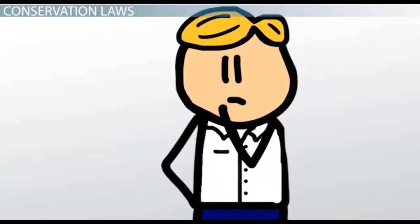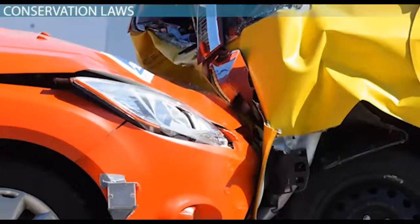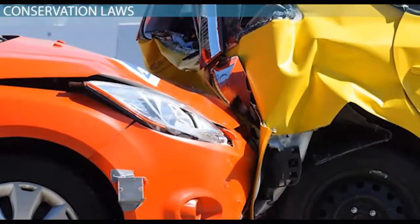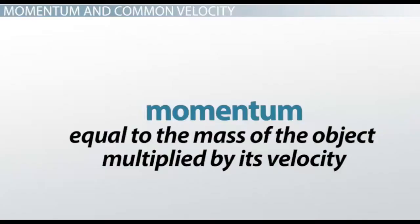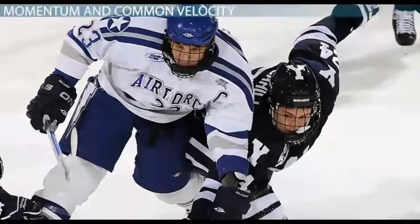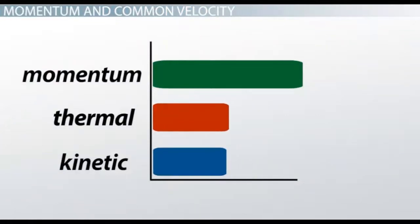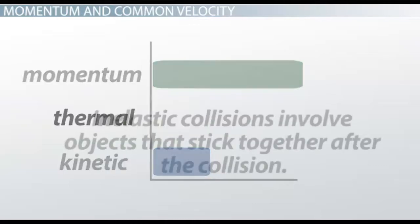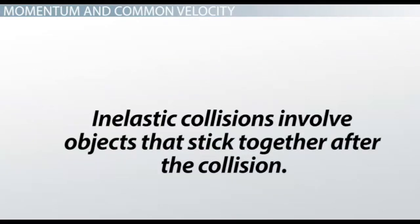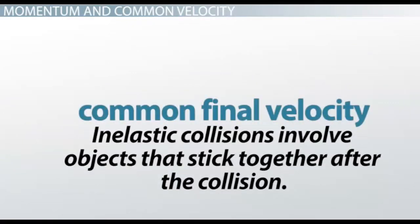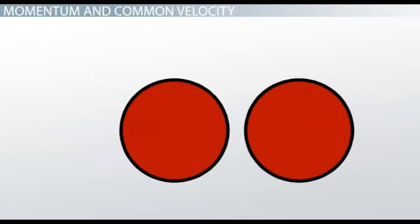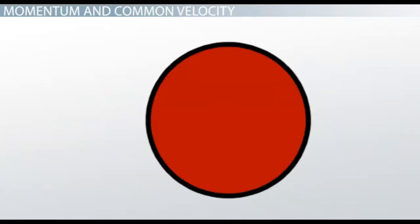What was conserved in this collision then? The physical quantity that is always conserved in collisions is momentum. Momentum is equal to the mass of the object multiplied by its velocity. In any collision, whether it is elastic or inelastic, the total momentum of the system before the collision must be equal to the total momentum of the system after the collision. Since inelastic collisions involve objects that stick together after the collision, we say that the objects have a common final velocity. They are no longer two separate objects, but have merged into one larger object.